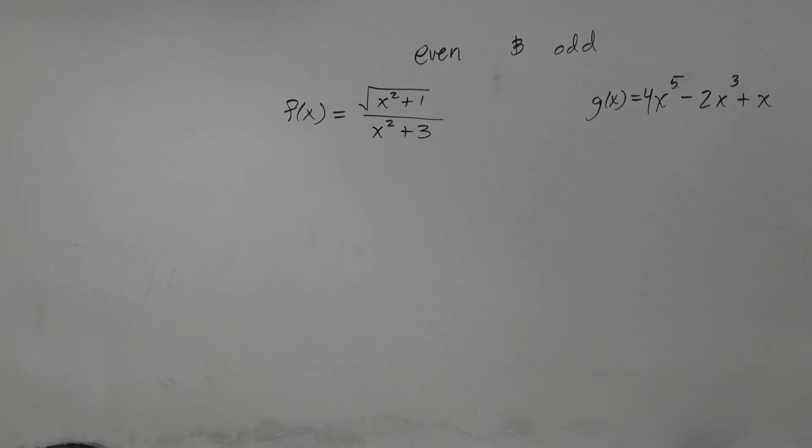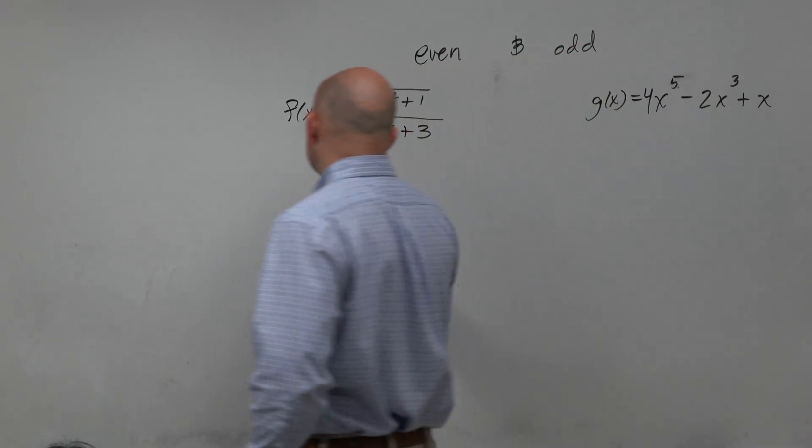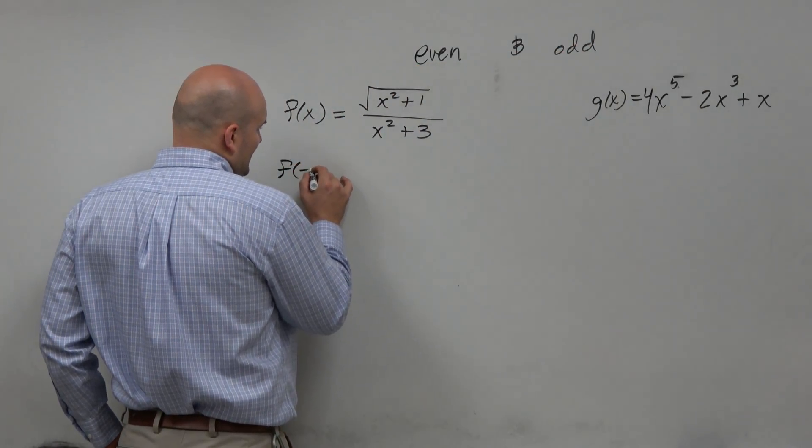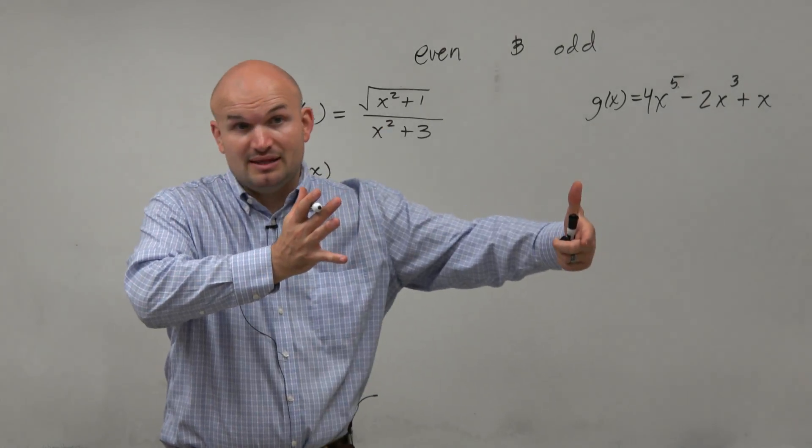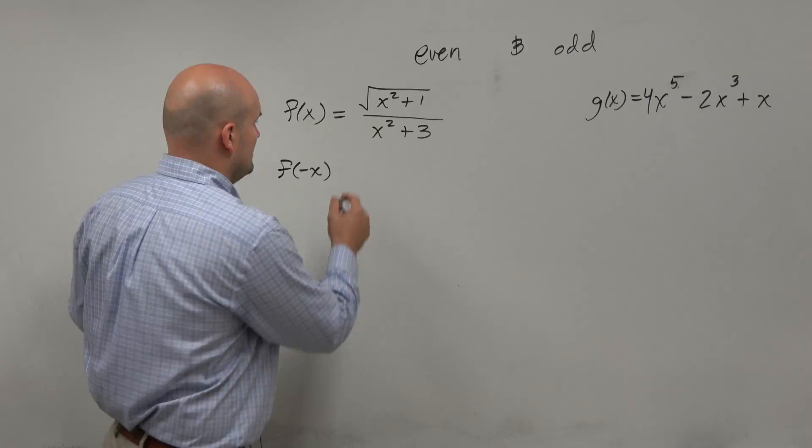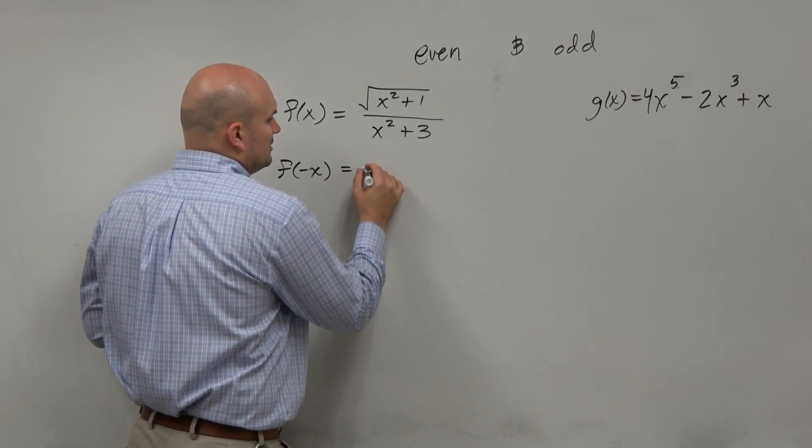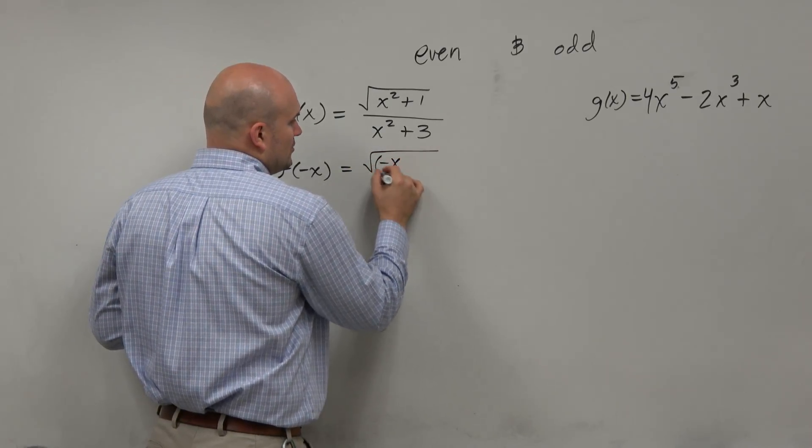We talked about symmetry and not talked about the algebraic process. So the test is real simple. All we simply need to do is plug in f of negative x. Just like we did the evaluating last, just plug in f of negative x. Then when you plug it in, simplify it to see what we get.